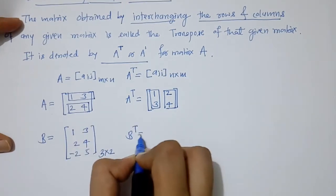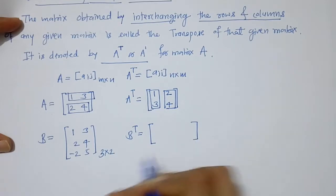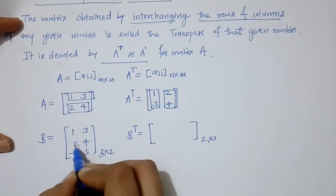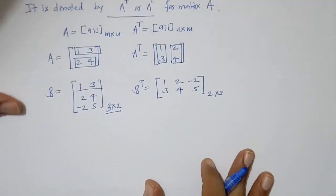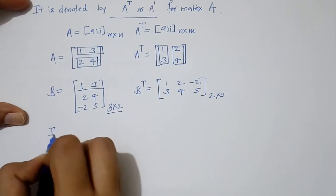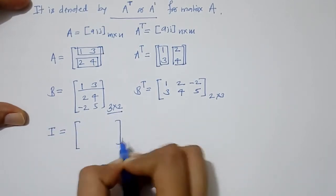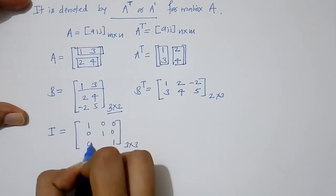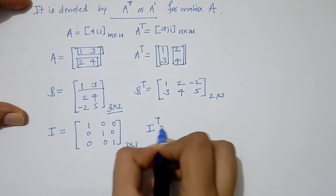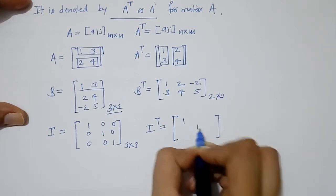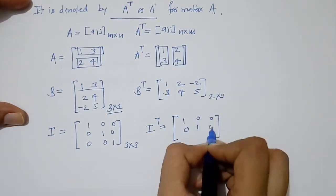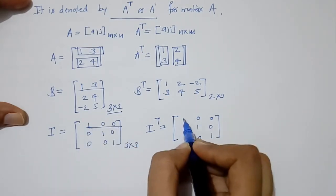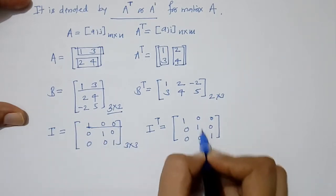We can take another matrix P and find its transpose, which will be a matrix of order 2 by 3. Similarly, if we have the identity matrix I of order 3 by 3, we can find its transpose. Observe that the transpose of the identity matrix is the original matrix I itself, since the rows become columns: first row to first column, second row to second column, third row to third column.